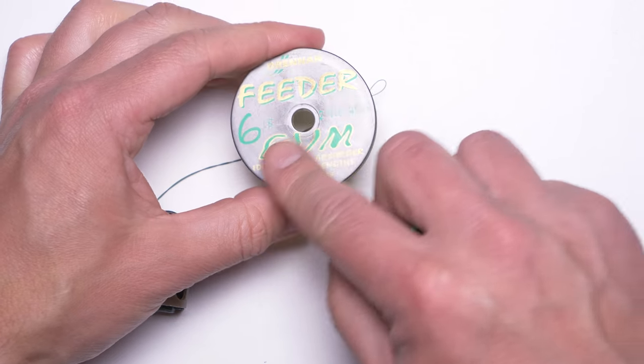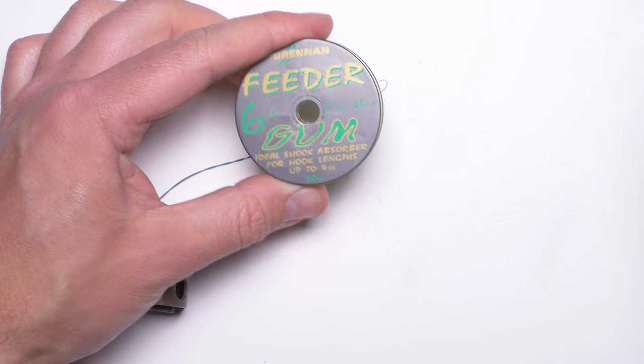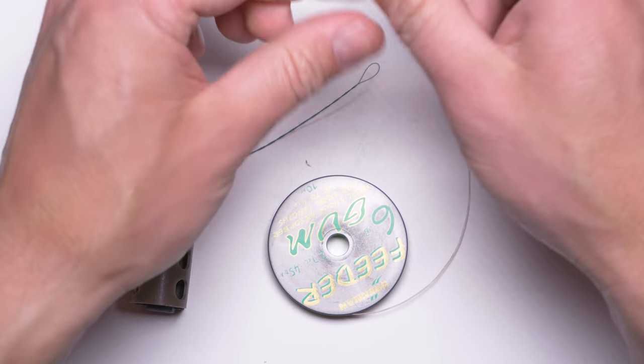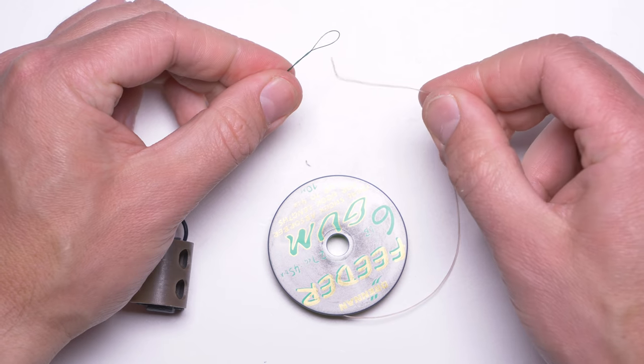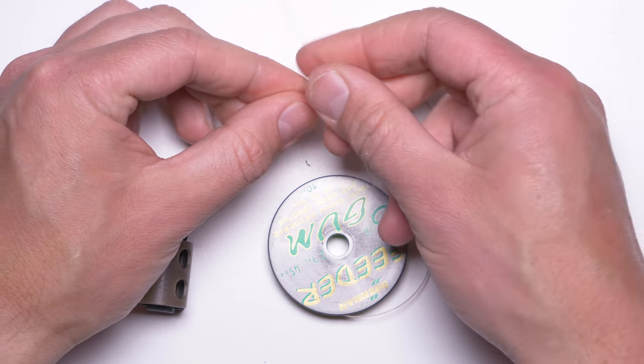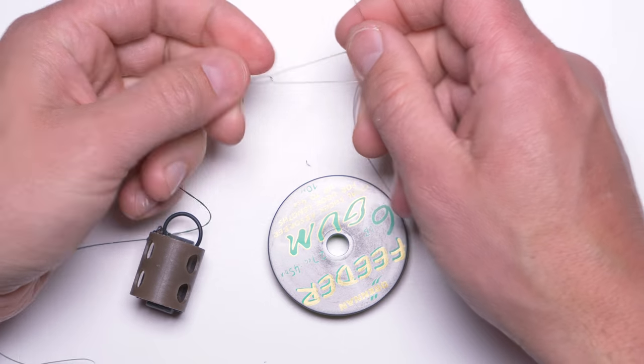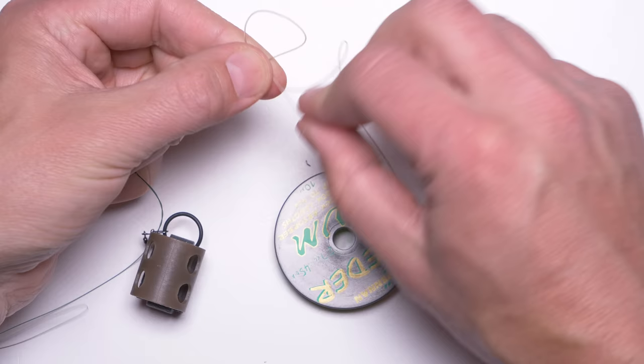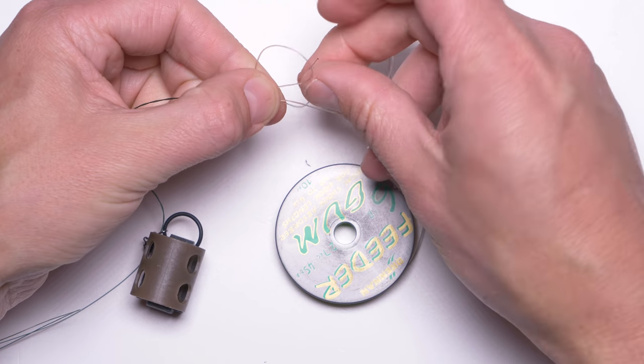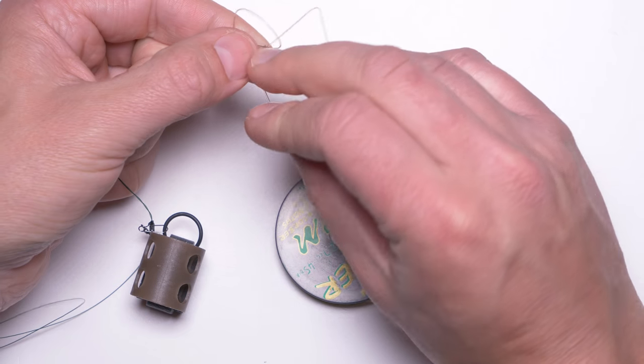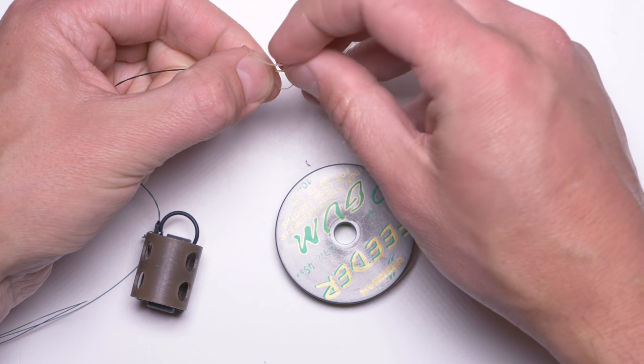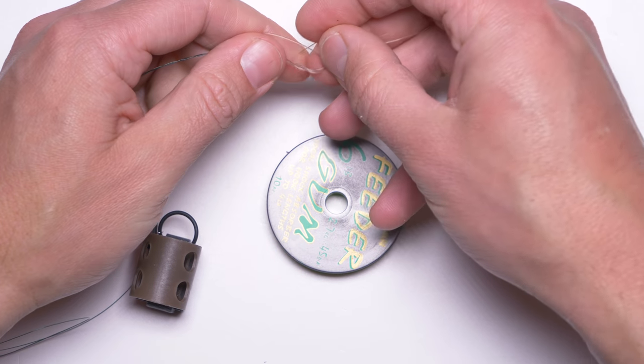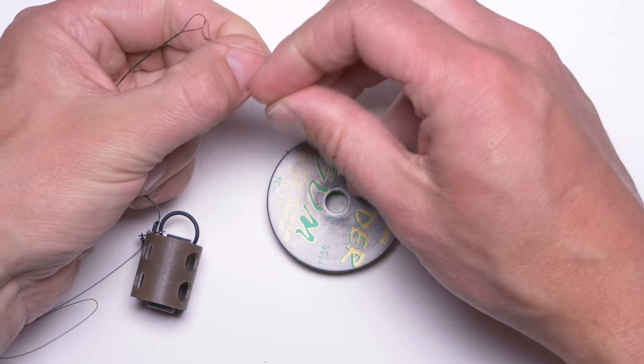I will use the thicker one, six pounds, in this case. So everything is very simple. I will use a grinner's knot to attach my feeder gum to this loop. Four turns most of the time are enough.